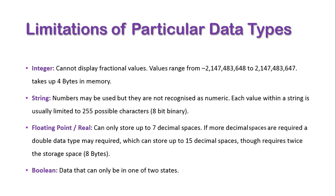And then finally is a boolean, and basically data can only be stored in one of two states. I hope this gives you a better understanding of the limitations of particular data types and data types in general, basically how we use different data types to let the program know essentially what we're going to be doing with data.